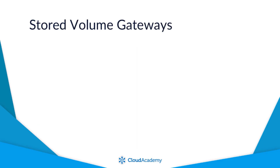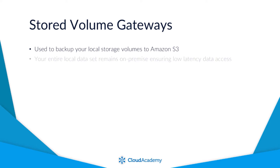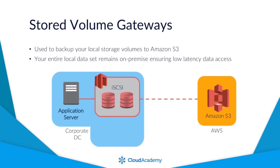The second gateway configuration option is volume gateways, which can be configured in one of two ways: stored volume gateways and cached volume gateways. Stored volume gateways are often used as a way to back up your local storage volumes to Amazon S3 while ensuring your entire data library also remains locally on-premise for very low latency data access. Volumes created within the storage gateway are backed by Amazon S3 and are mounted as iSCSI devices that your applications can then communicate with.